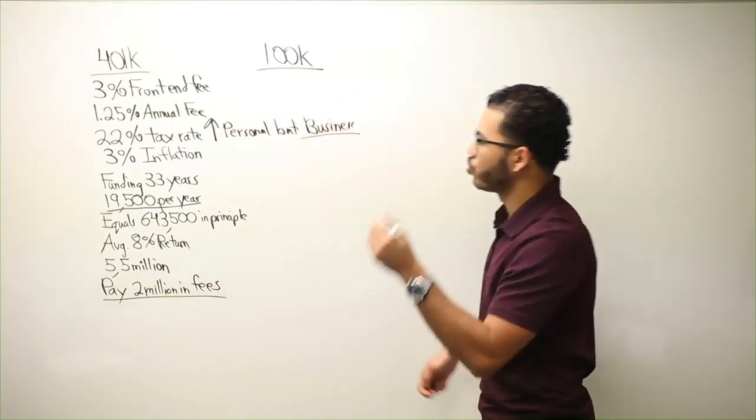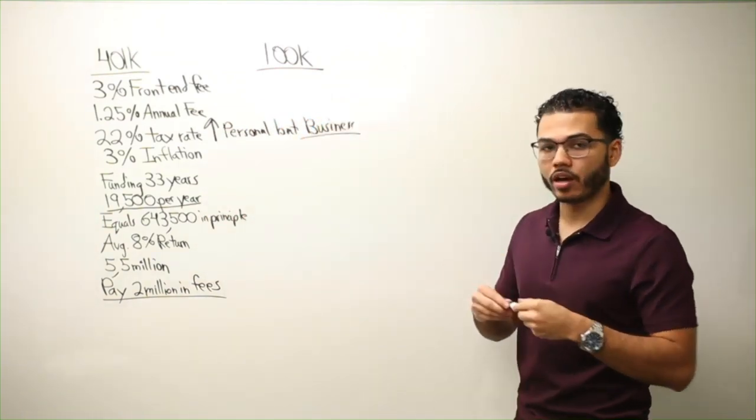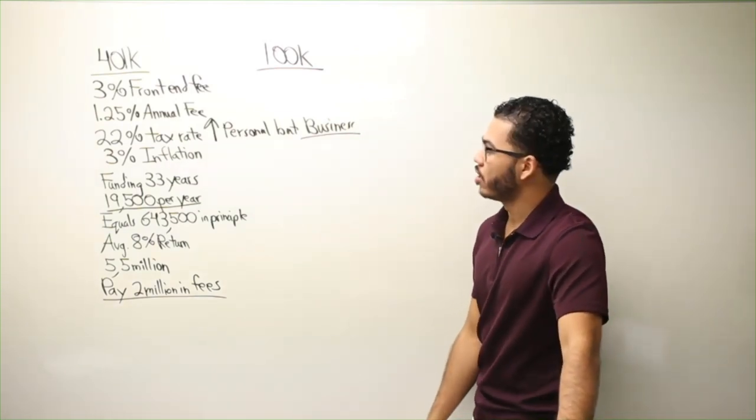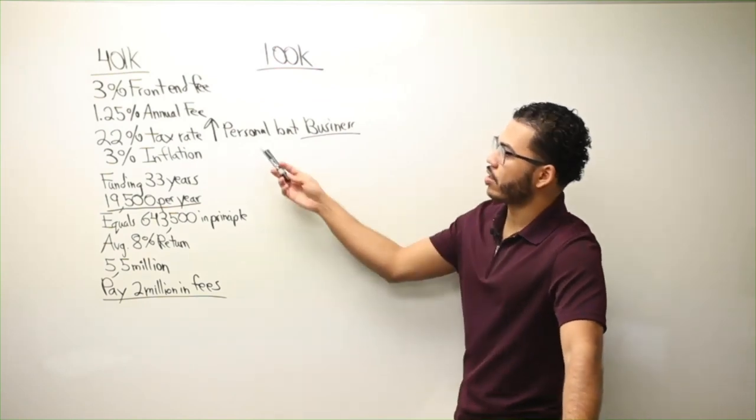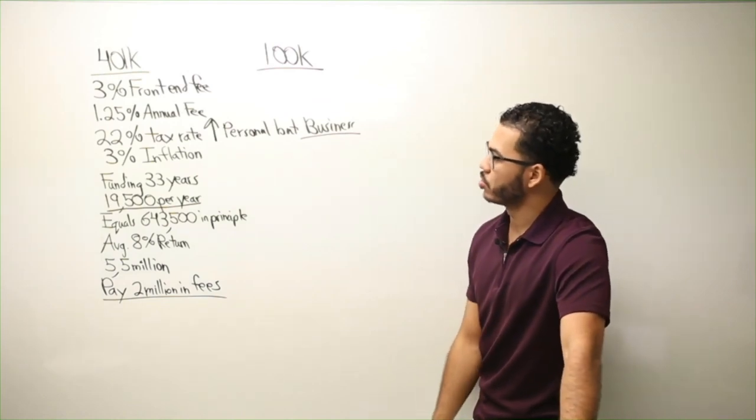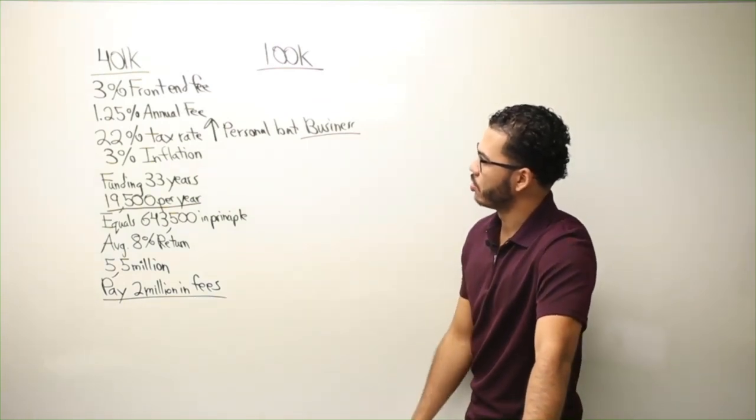You want to run your wealth and income as much as you can through business or capital gains, or royalties rather than personal because personal is the highest tax rate, ordinary tax, personal, ordinary income tax, however that works.